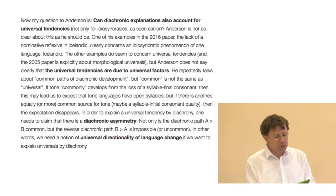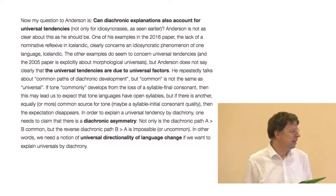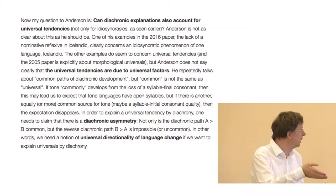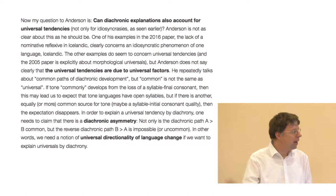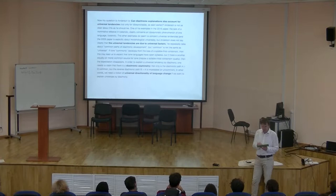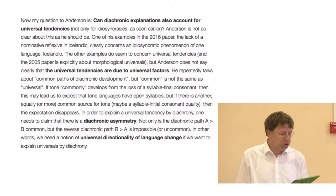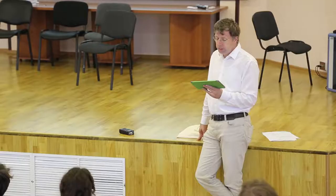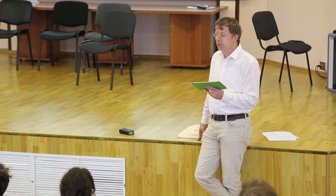My question — from my blog post to Stephen Anderson — was: can diachronic explanations also account for universal tendencies? Because these are two different things: language-particular facts like Lezgian final voicing and Icelandic reflexives, versus universal tendencies. This course is called 'Explaining Universals' because I'm particularly interested in explaining universals and generally pessimistic about explaining language-particular idiosyncrasies. Anderson is not as clear about this as he should be. One of his examples — the lack of a nominative reflexive in Icelandic — clearly concerns an idiosyncratic phenomenon of one language, while other examples do seem to concern universal tendencies.